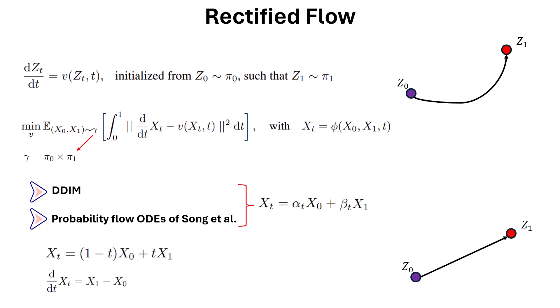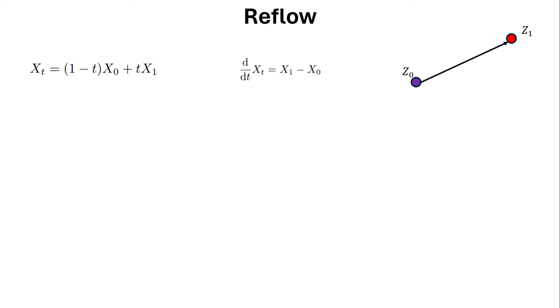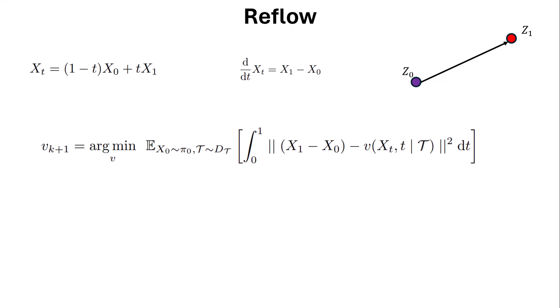The question is how to have the pairs of X1 and X0 to train the model. The method defined in that paper is called reflow. Reflow is an iterative algorithm that updates the parameters of our model without changing the marginal distributions — meaning Z0 and Z1 — so as to change the transition from a curvature iteratively and move it towards a straight line.